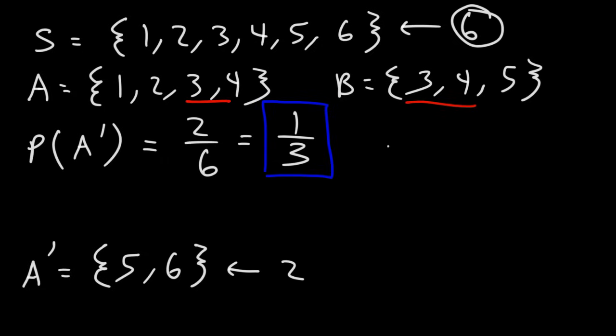Now, what about the probability of getting event A occurring? What would you say? Now, there's four favorable outcomes that lead to event A out of six. So four over six reduces to two over three.